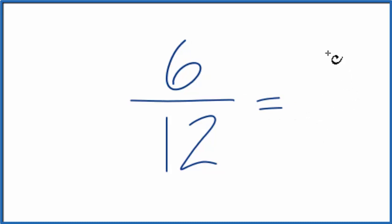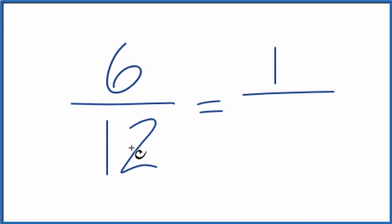So I could divide the top by 6. That would give me 1. And then divide the bottom by 6. That would give me 2. So when we simplify or reduce the fraction 6 twelfths, we get 1 half.